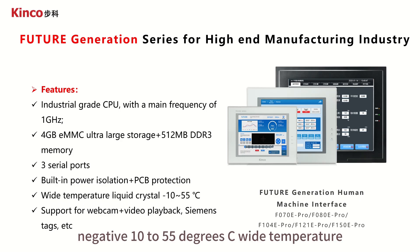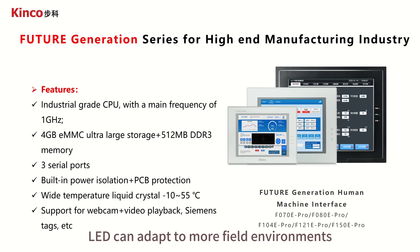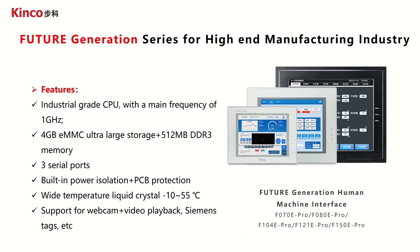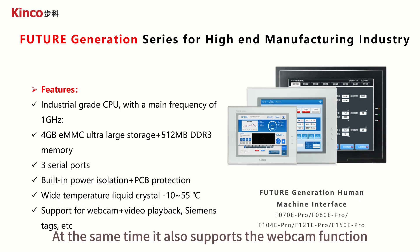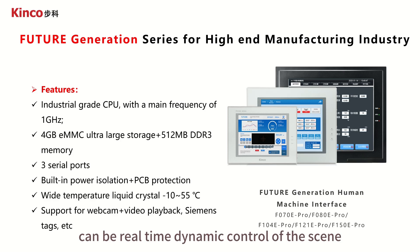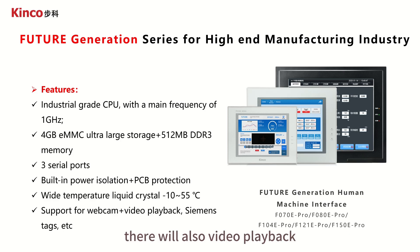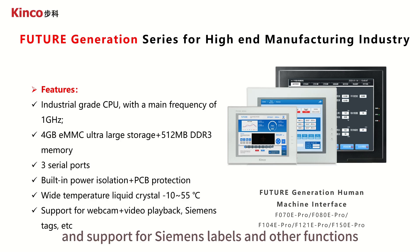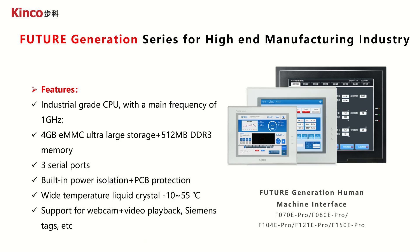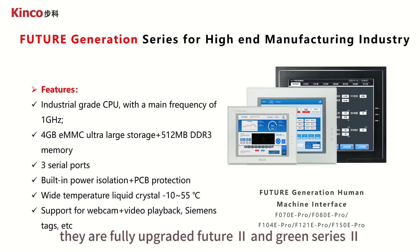Built-in power insulation and PCB spraying protection make anti-interference ability stronger. A negative 10 to 55 degrees Celsius wide temperature range can adapt to more field environments. At the same time, it also supports the webcam function for real-time dynamic control of the scene, as well as video playback and support for Siemens labels and other functions.